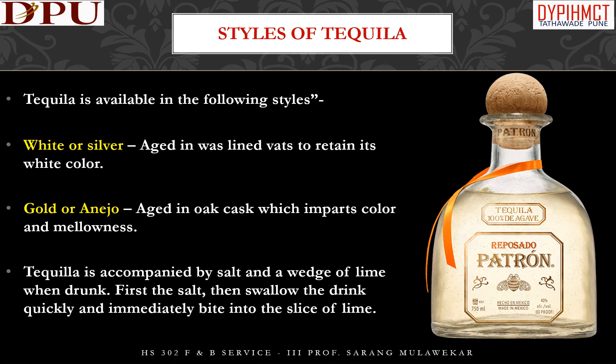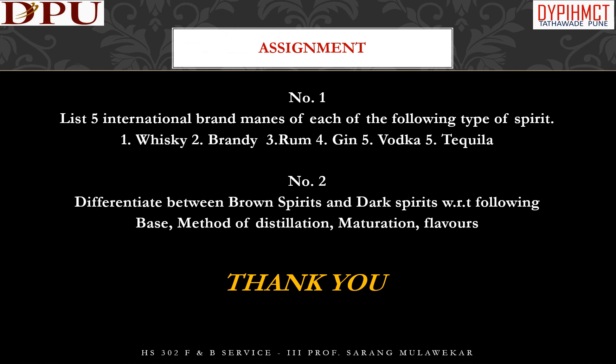Styles of tequila: White or Silver tequila is aged in wax-lined vats to retain its white color. Gold or Anejo tequila is aged in oak casks, which imparts color and mellowness. Tequila is accompanied by salt and a wedge of lime while drinking — first the salt, then swallow the drink quickly, and immediately bite into the slice of lime.